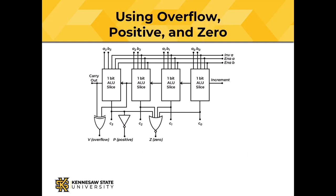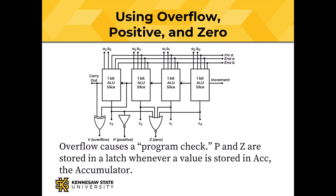So how do we use these? Overflow is a program check — we stop; it's an unrecoverable error. The P and Z values are stored in a latch, which is updated whenever a value is stored in the accumulator. So the PZ latch always reflects the value in the accumulator.